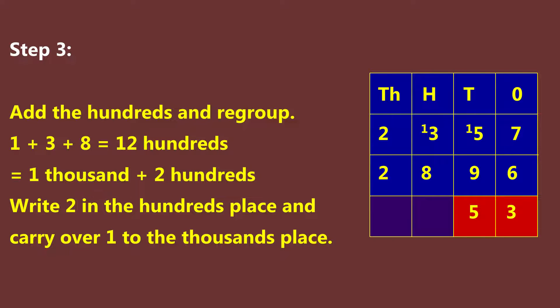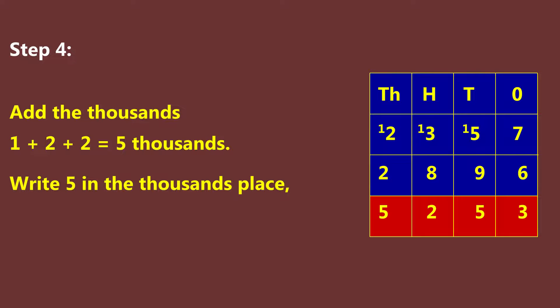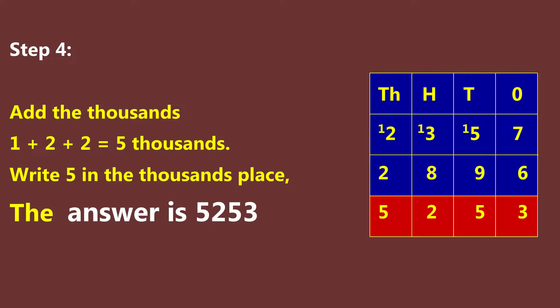Step 3: Add the hundreds and regroup. One plus three plus eight is equal to twelve hundreds — one thousand plus two hundreds. Write two in the hundreds place and carry over one to the thousands place. Step 4: Add the thousands. One plus two plus two is equal to five thousands. Write five in the thousands place. The answer is five thousand two hundred and fifty-three.